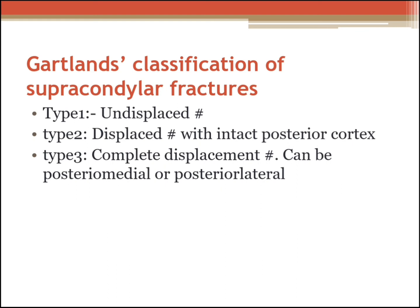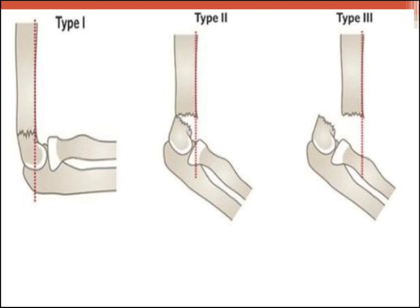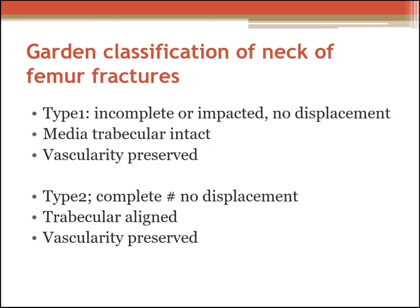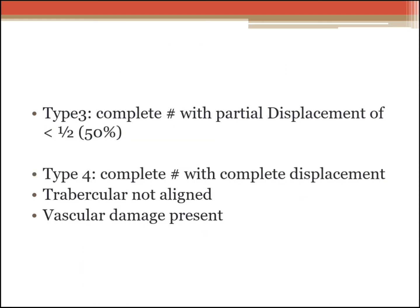The Pauwels classification: Type 1 is undisplaced, Type 2 is a displaced fracture with intact posterior cortex, and Type 3 is complete displacement — either posteromedial or posterolateral. The Garden classification of neck of femur fractures: Type 1 is incomplete or impacted with no displacement, medial trabeculae intact, vascularity preserved. Type 2 is complete fracture with no displacement, trabeculae aligned, vascularity preserved. Type 3 is complete fracture with partial displacement of less than 50 percent. Type 4 is complete fracture with complete displacement, trabeculae not aligned, and vascular damage present.